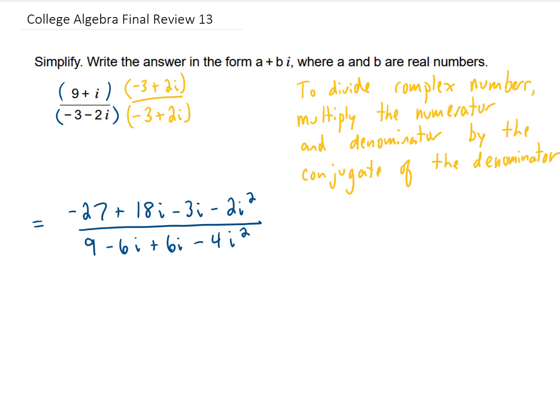You'll notice that when we distribute out our numerator and our denominator, in our denominator, our i terms should cancel. If that doesn't happen, then something has gone wrong. We'll also notice that we have a couple of i squares here in this problem, and we can replace each of those i squares with negative 1.